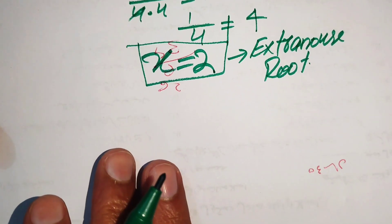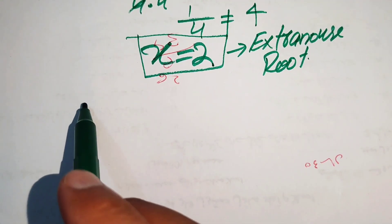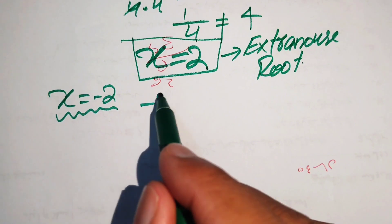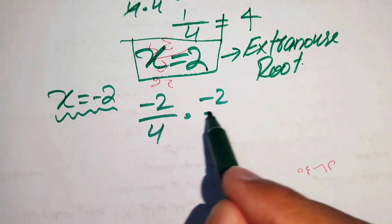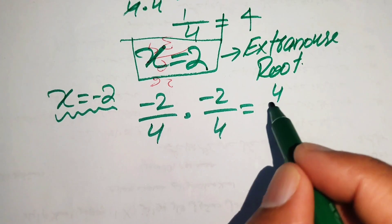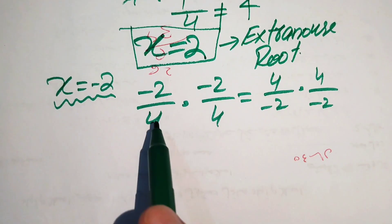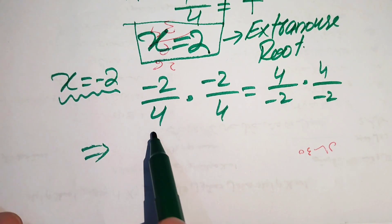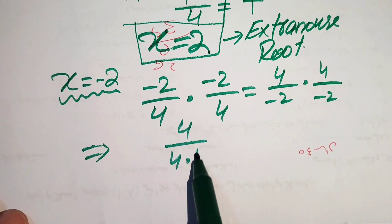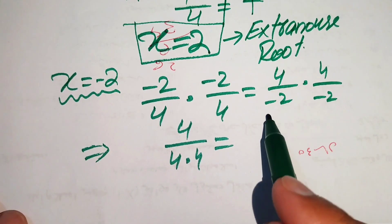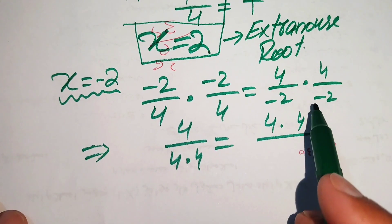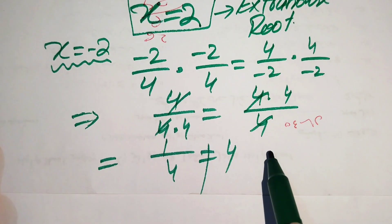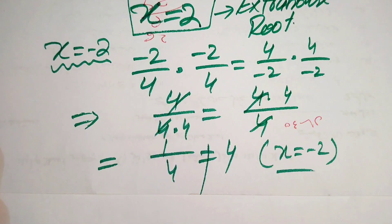Now we check the second value, x equals minus 2. Substituting into both sides: left side gives minus 2 over 4 into minus 2 over 4, and right side gives 4 over minus 2 into 4 over minus 2. Computing both sides gives 1 over 4 equals 1 over 4. However, this root is also deemed not to satisfy the given equation.